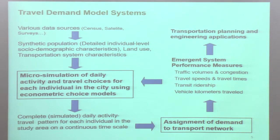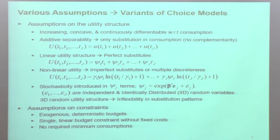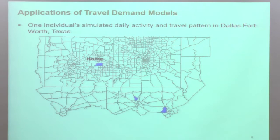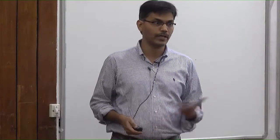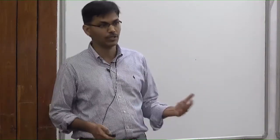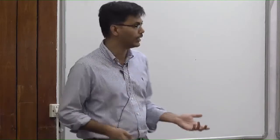For example, this is some work that we did in Dallas-Fort Worth on micro-simulating travel patterns of individuals. This is one output for one individual. The idea is not to really predict what exactly one individual does, but one can do a lot by putting together the travel patterns of everybody in the city.